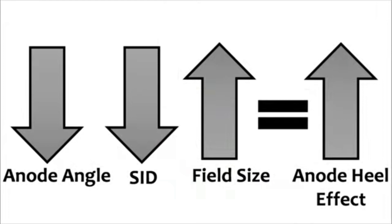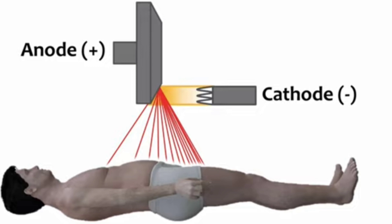In summary: if the field size increases, the Anode Heel Effect increases — directly proportional. The anode angle side is inversely proportional. The importance of the Anode Heel Effect is that we have to use it to achieve uniform density.